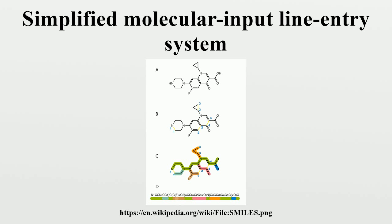If the brackets are omitted, the proper number of implicit hydrogen atoms is assumed. For instance, the SMILES for water is simply O. An atom holding one or more electrical charges is enclosed in brackets, followed by the symbol H if bonded to hydrogen atoms, then by the number of hydrogen atoms, then by the sign plus for a positive charge or minus for a negative charge. The number of charges is specified after the sign, or alternatively the sign can be written as many times as the ion has charges. Thus, the hydroxide anion is represented by [OH-], the oxonium cation is [OH3+], and the cobalt-3 cation is either [Co+3] or [Co+++].